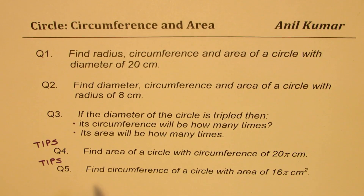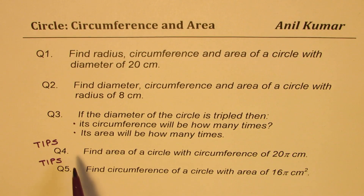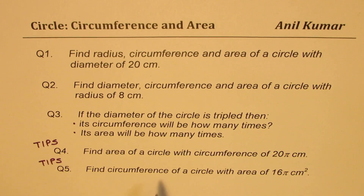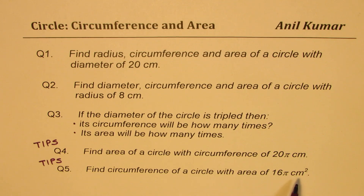Question number five: find circumference of a circle with area of 16π centimeters squared. Similar to question number four — however, this time, we have to find circumference and we are given the area.